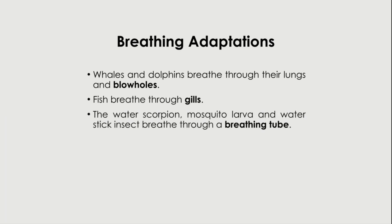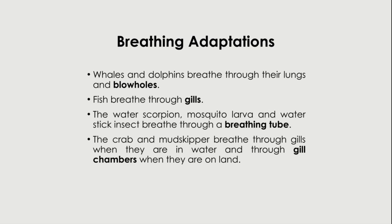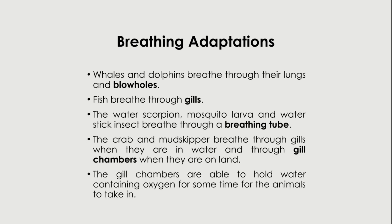Fish breathe through gills. The water scorpion, mosquito larva, and water stick insect breathe through a breathing tube. Crabs and mudskippers breathe through gills when in water and through gill chambers when on land. The gill chambers are able to hold water containing oxygen for some time for the animals to take in, so they normally breathe through gills but the gill chambers also contain some oxygen.